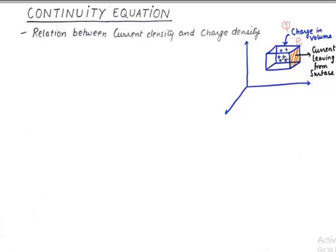Now, if this charge moves out of this cube from this surface area which is colored in orange, we will say that the charge is moving out from this surface and movement of charge is known as current. So we will say that the current is leaving from the surface.